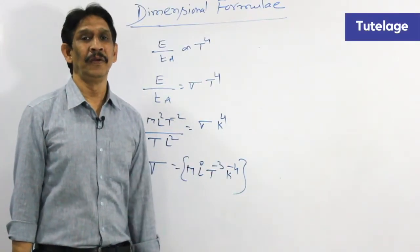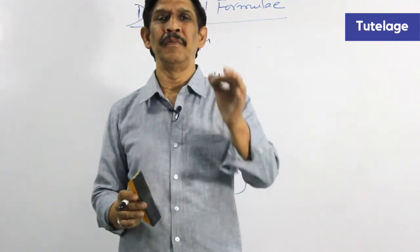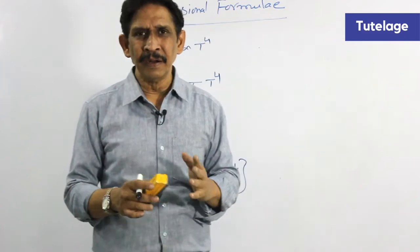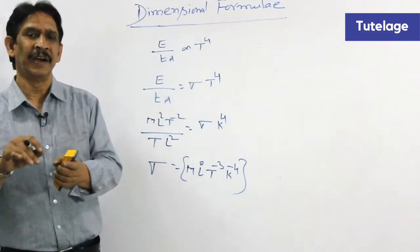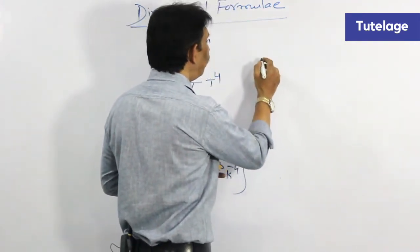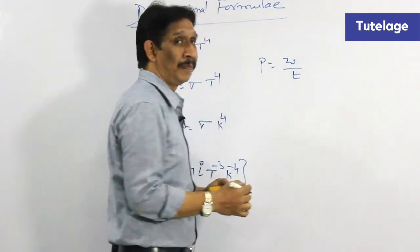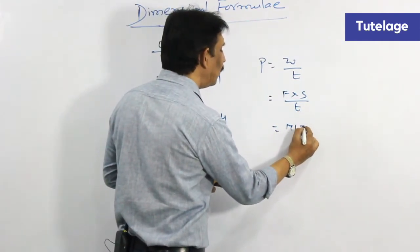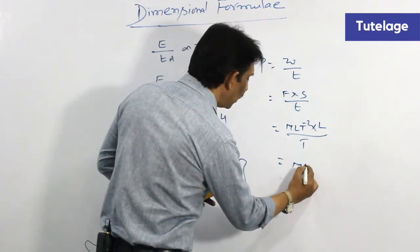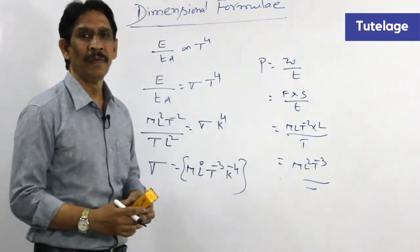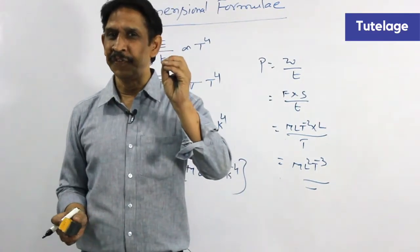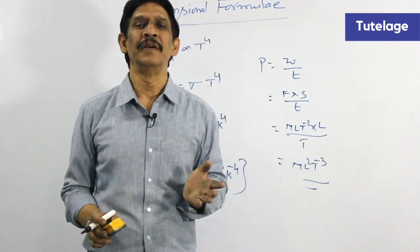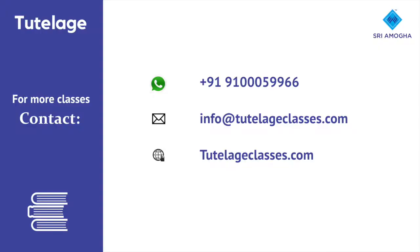To conclude: how to get the dimensional formula is by knowing the basic formula. Don't memorize the dimensional formula — know the basic formula and derive it. For example, power equals work by time, work is F into s, so power equals M L T minus 2 into L by T, which simply gives M L square T minus 3. Know the basic formula for any physical quantity and you can obtain the dimensional formula for any physical quantity.